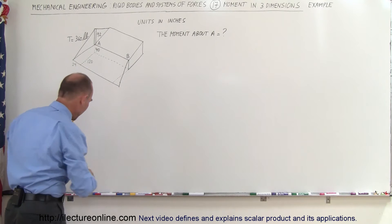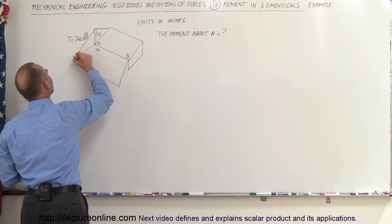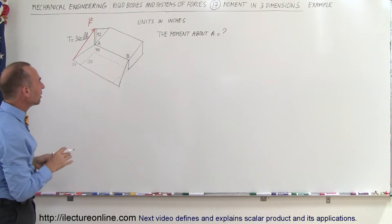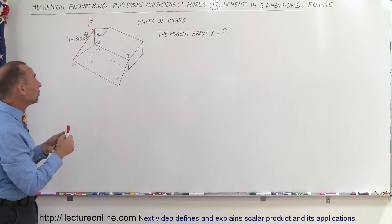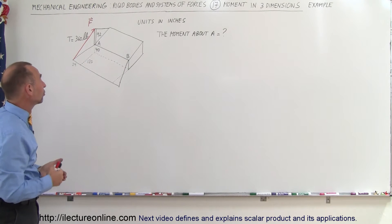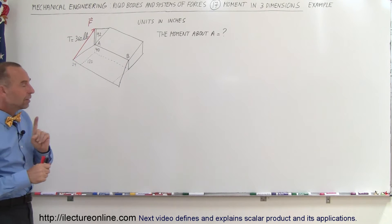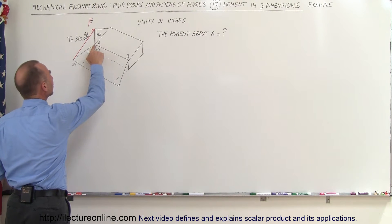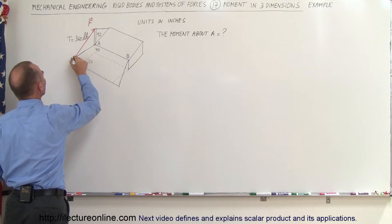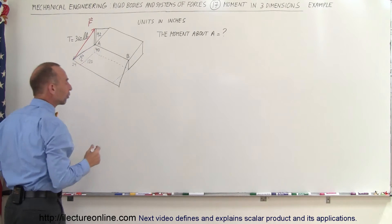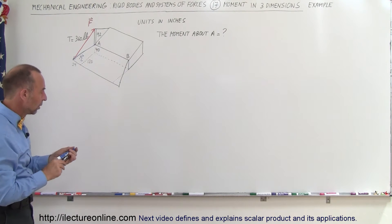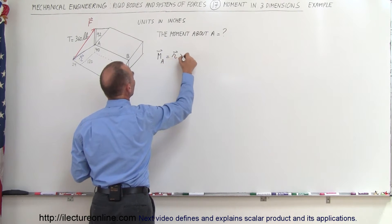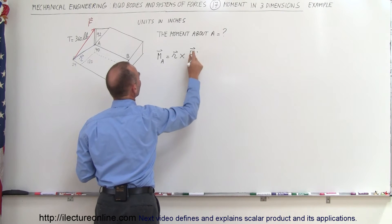To solve this, we first recognize that the force will act in a direction having X, Y, and Z components. We can only find those components by finding the direction cosines of that force. We also need to find the position vector — from the point about which we're finding the moment to the point where the force is acting. The moment about point A equals the cross product of the position vector R with the force F.